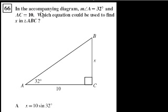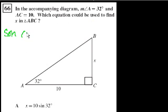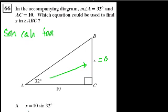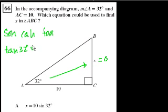We're on problem 66. In the accompanying diagram, measure of angle A is 32 degrees and AC is equal to 10. Which equation could be used to find x in triangle ABC? So we want x. Let's write our SOHCAHTOA down. What have they given us? X is the opposite side — it's opposite our angle in question. And then this side of 10 is the adjacent.